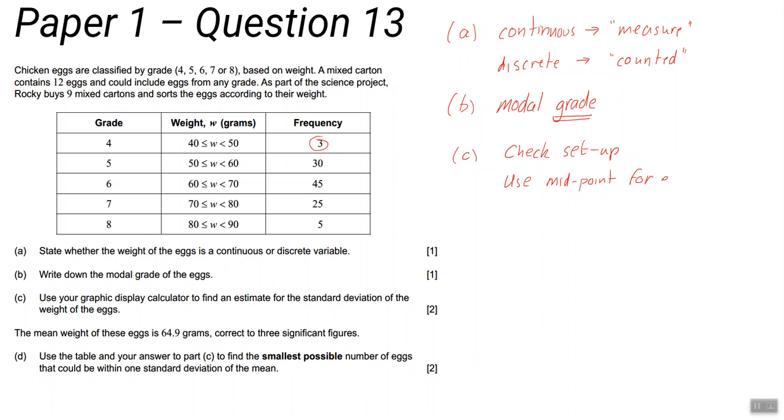Use the mid-point for each interval and then use your GDC to come up with your summary statistics. You're looking for Sigma X - the Greek letter Sigma. There's two standard deviation figures.